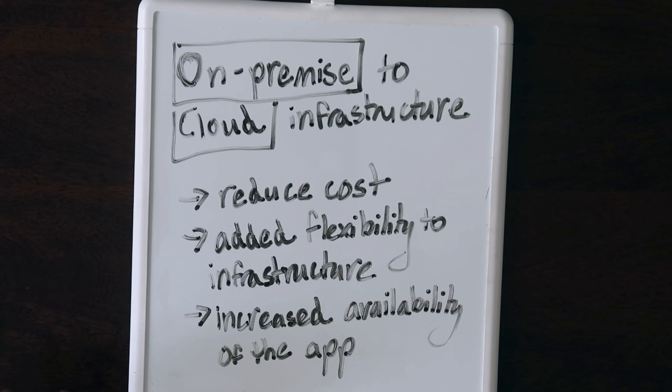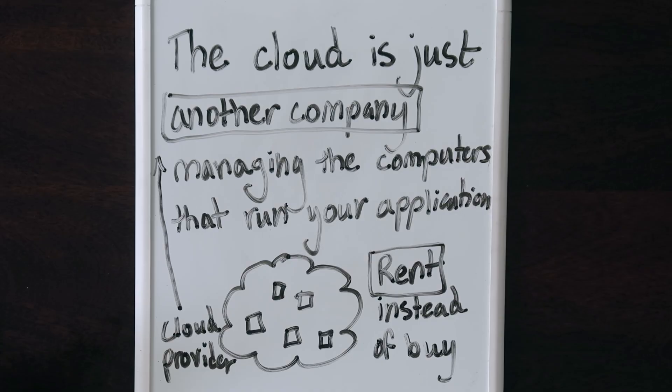But this introduces a new problem: how exactly do you configure these machines? Although you can rent them, you still need to know what resources and specifications you need at a given time. How do you make sure you're not wasting money on unnecessary infrastructure? Well, you could stare at dashboards for hours and hours and then eventually make an educated guess, or you could use a tool from our sponsor, Turbonomic from IBM.